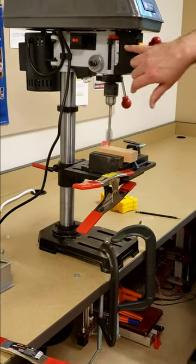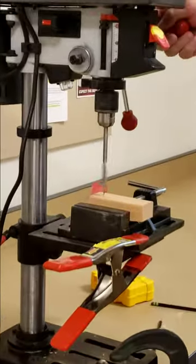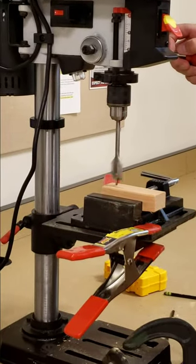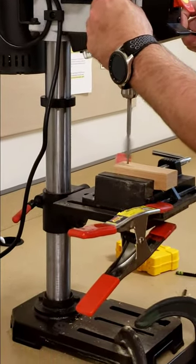You can kind of see the depth gauge here. Right now I want to check it. There is my zero, right? I'm going to just move that on down.